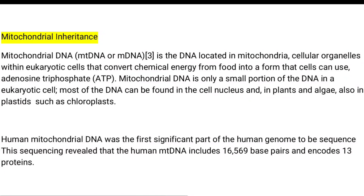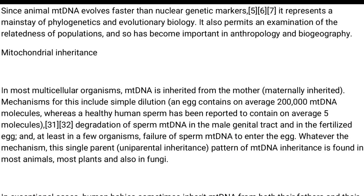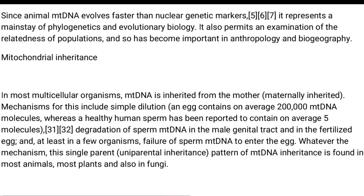The human mitochondrial DNA was the first significant part of the human genome to be sequenced. This sequencing revealed that there are 16,569 base pairs present in the mitochondrial DNA, which code for 13 proteins. Animal mitochondrial DNA evolves faster than nuclear genetic markers, making it a mainstay of phylogenetics and evolutionary biology.